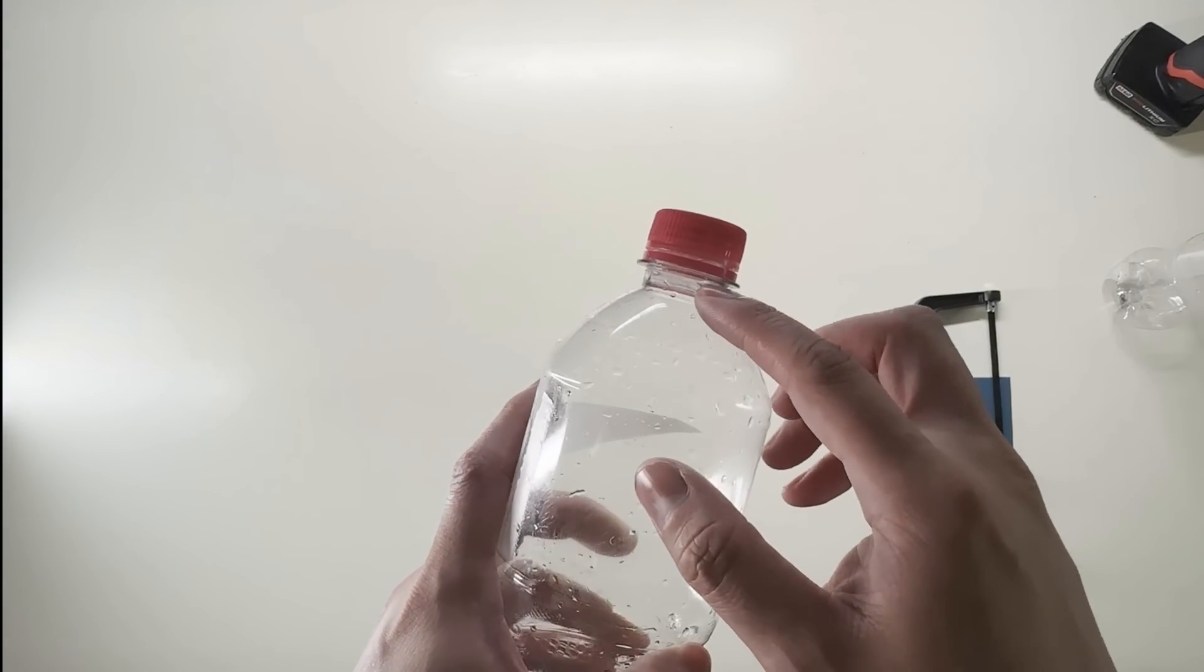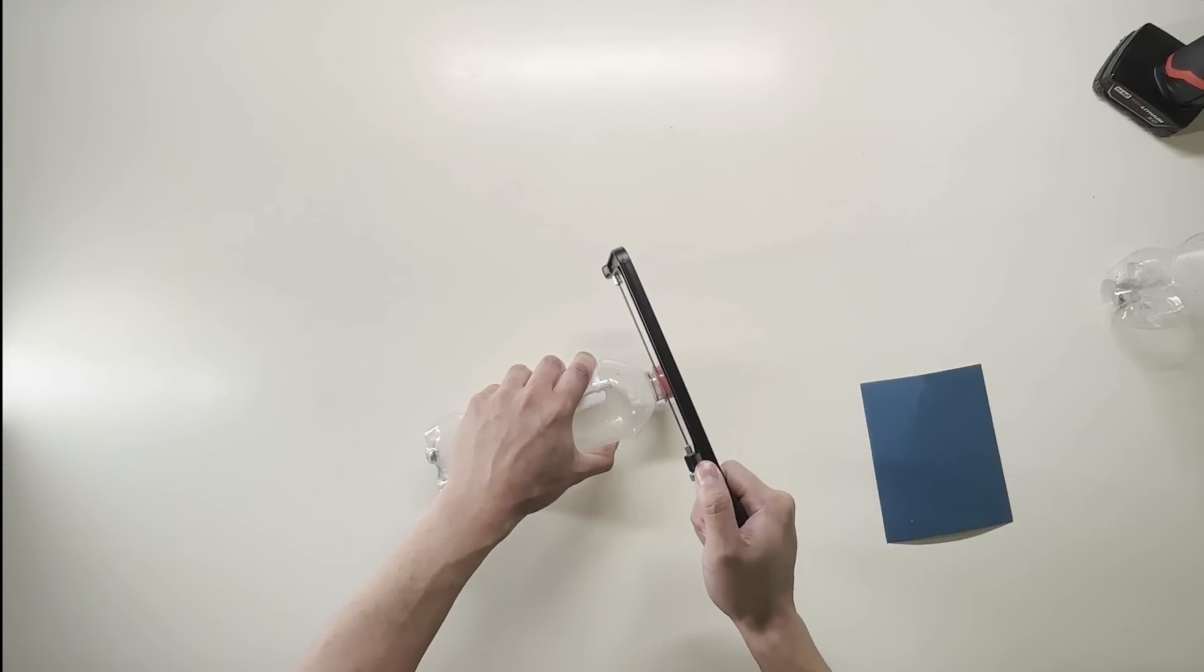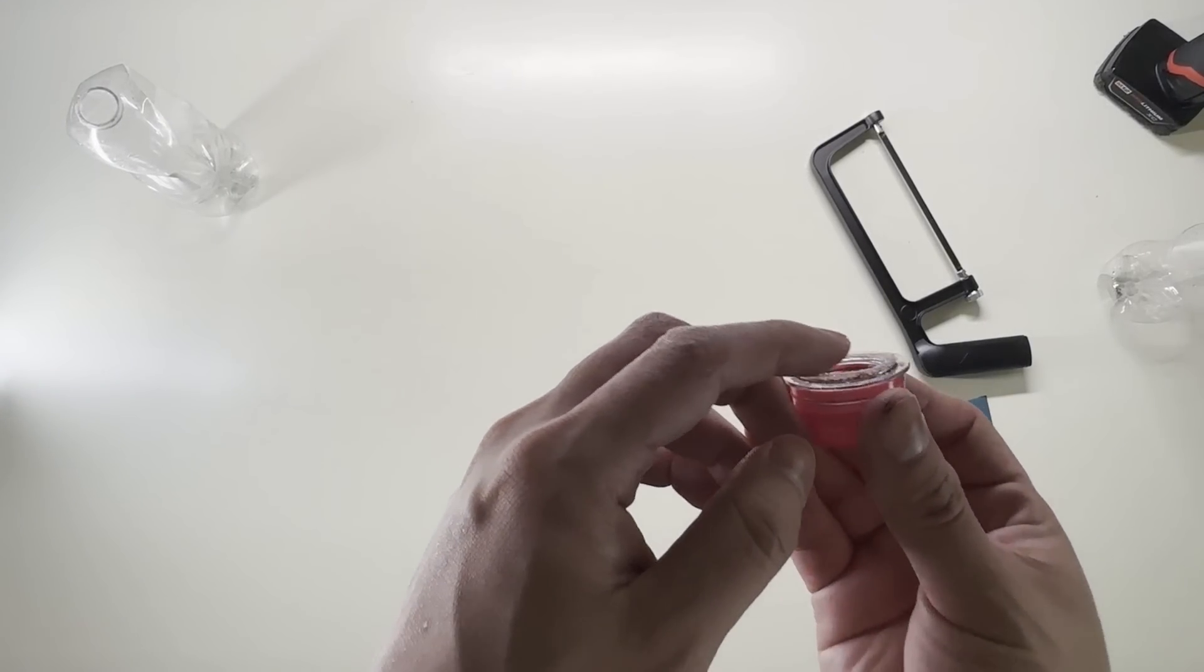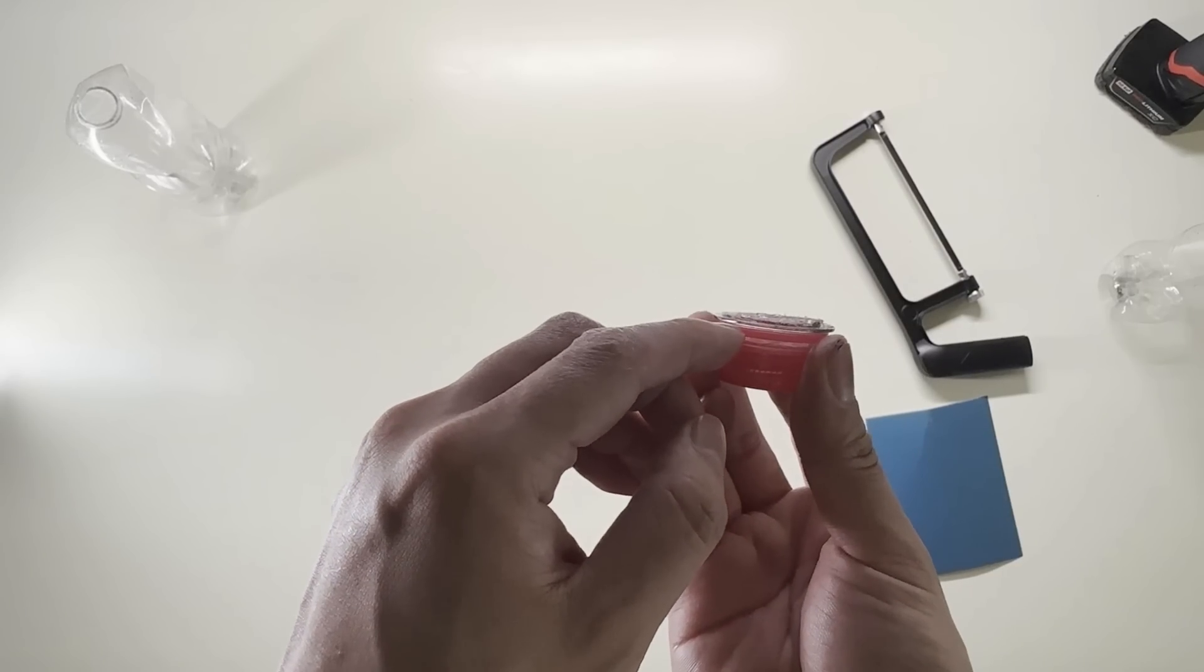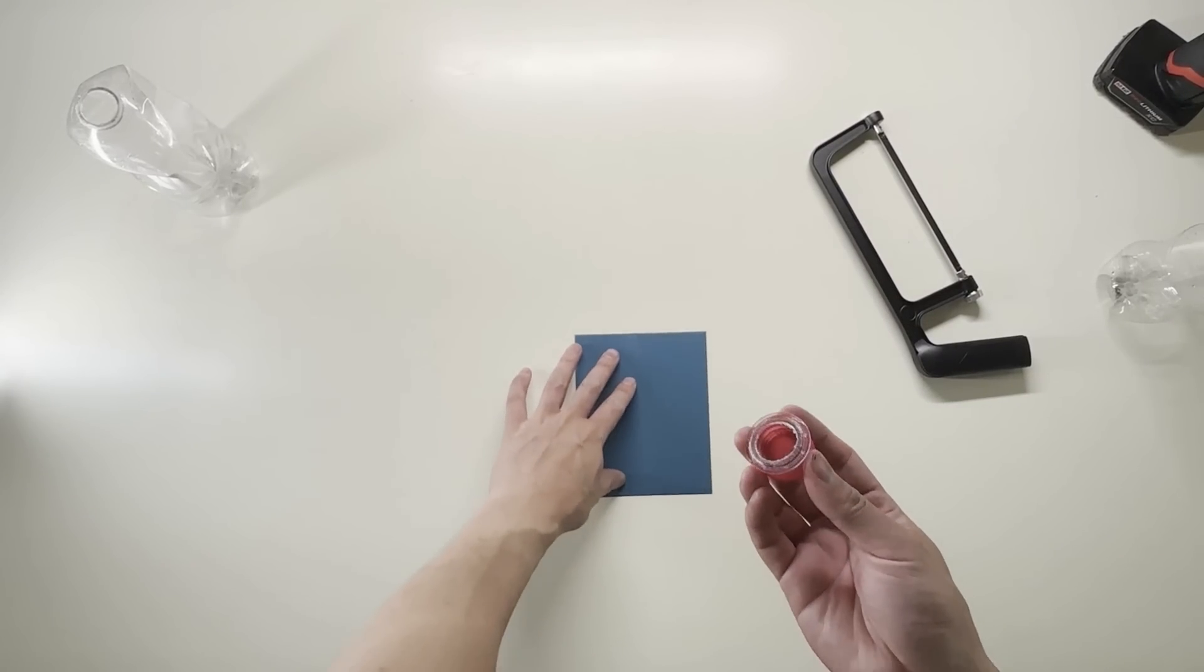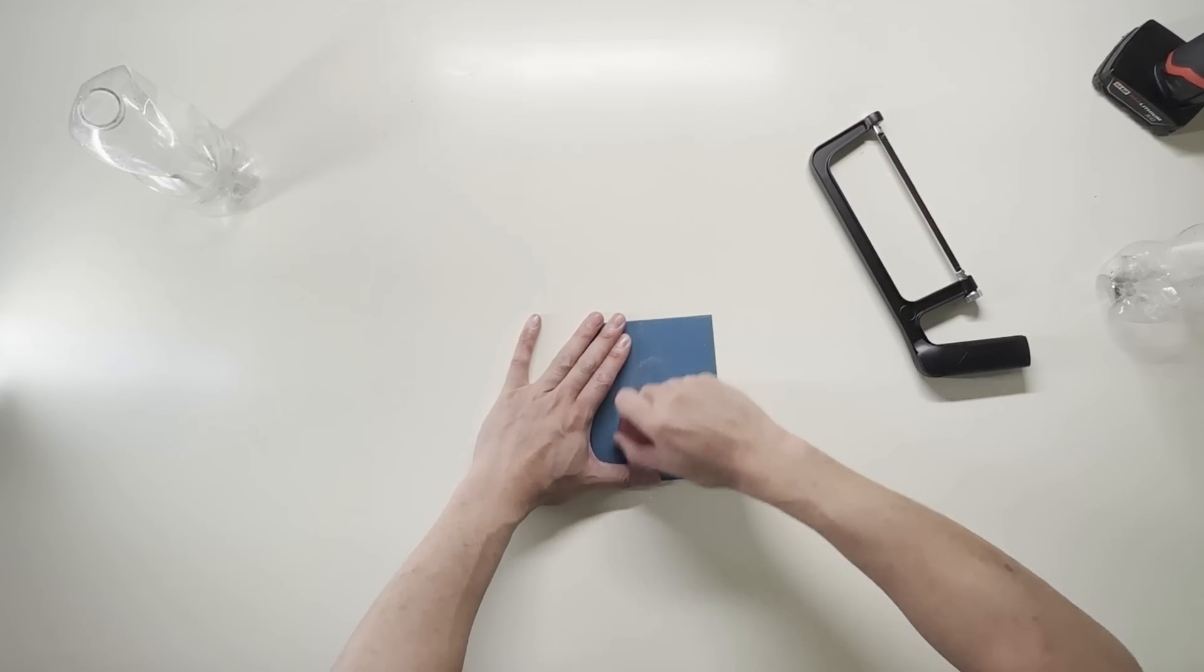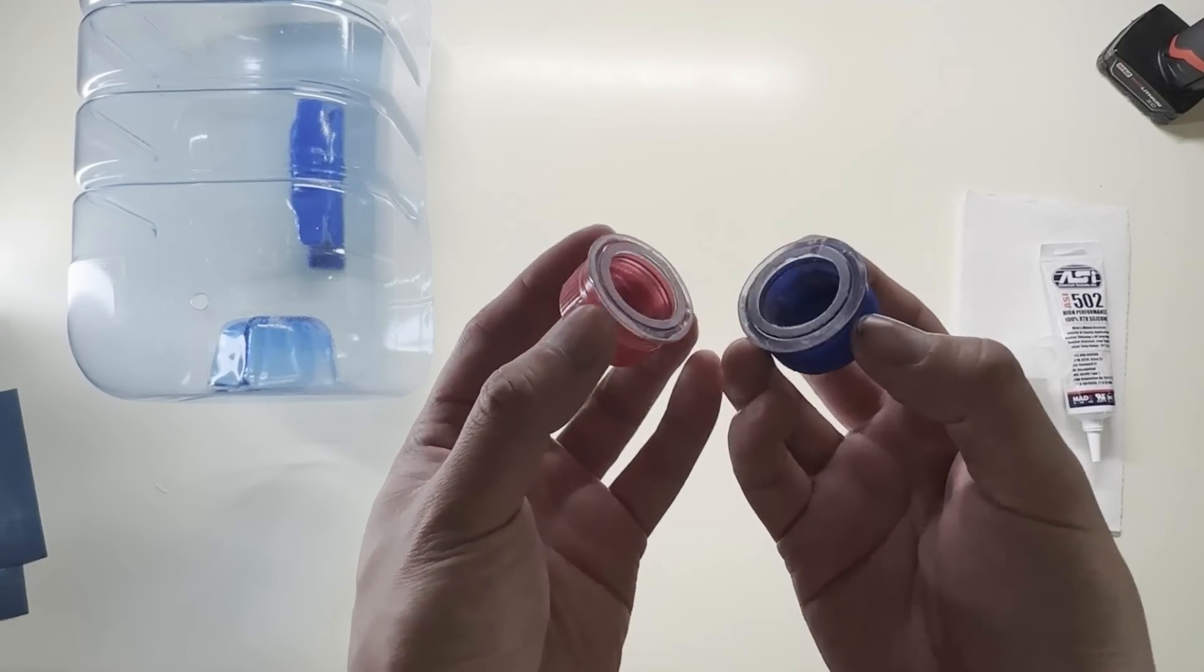Grab your soda bottle. You'll want to cut off the cap as indicated right along this edge. Your cap might have an uneven edge after cutting. Using a piece of sandpaper, sand down the cap as level as possible to prevent any gaps for the silicone. Your cap should look like this when you're done.